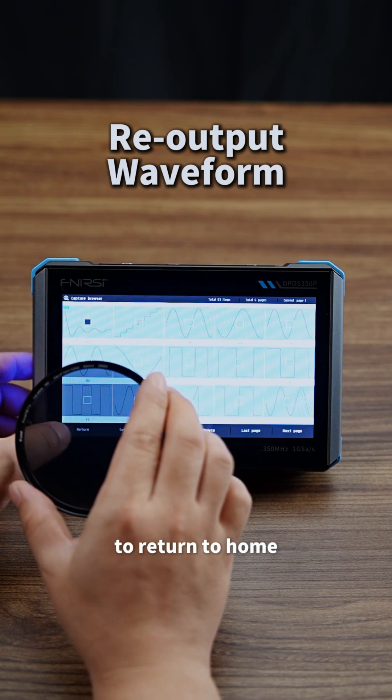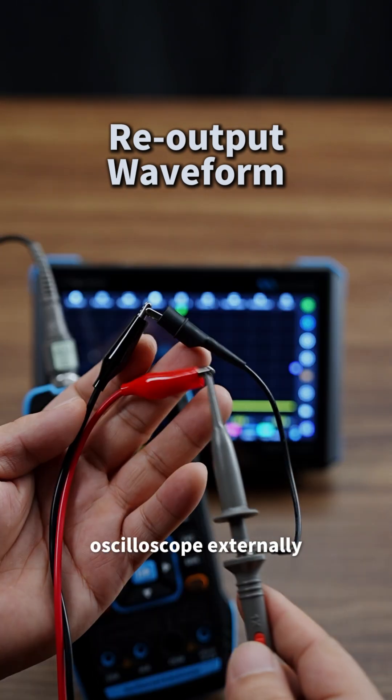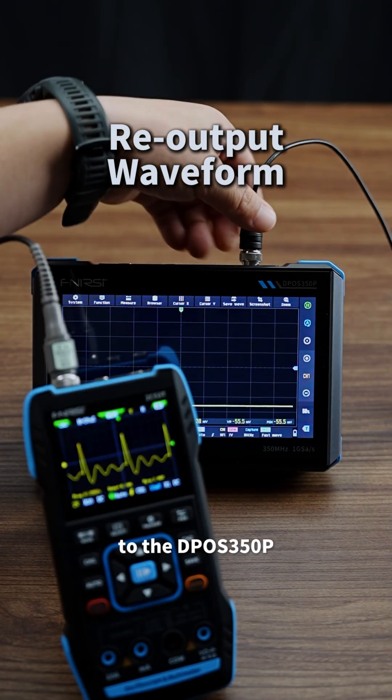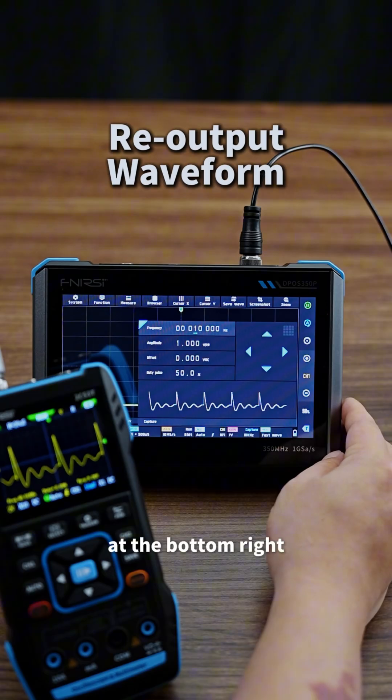Tap Back on the left to return to home. Step 2: Connect another oscilloscope externally. Attach its probe to the DP OS350P signal output port. After connecting the cables, tap Gen at the bottom right.